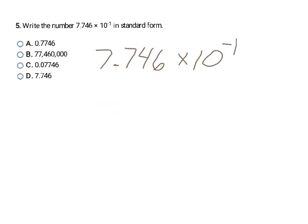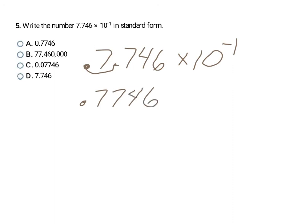Now I'm given a number in scientific notation and asked to write it in standard form. The exponent is negative 1, which means I need to move the decimal one spot to create a smaller number. To create a smaller number, I move it once to the left. My new number is 0.7746, which is choice A.